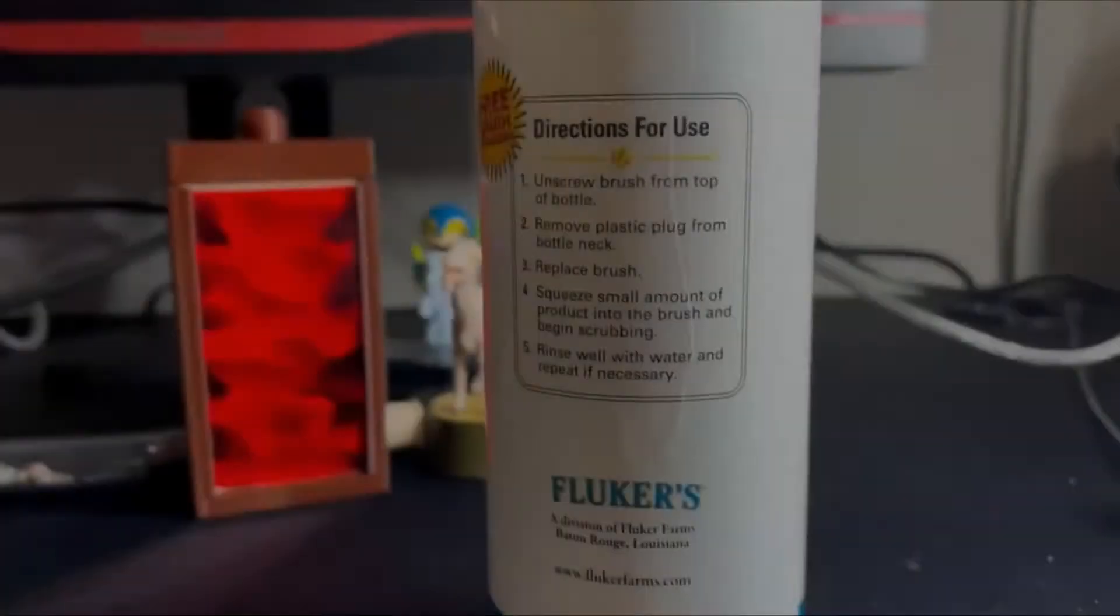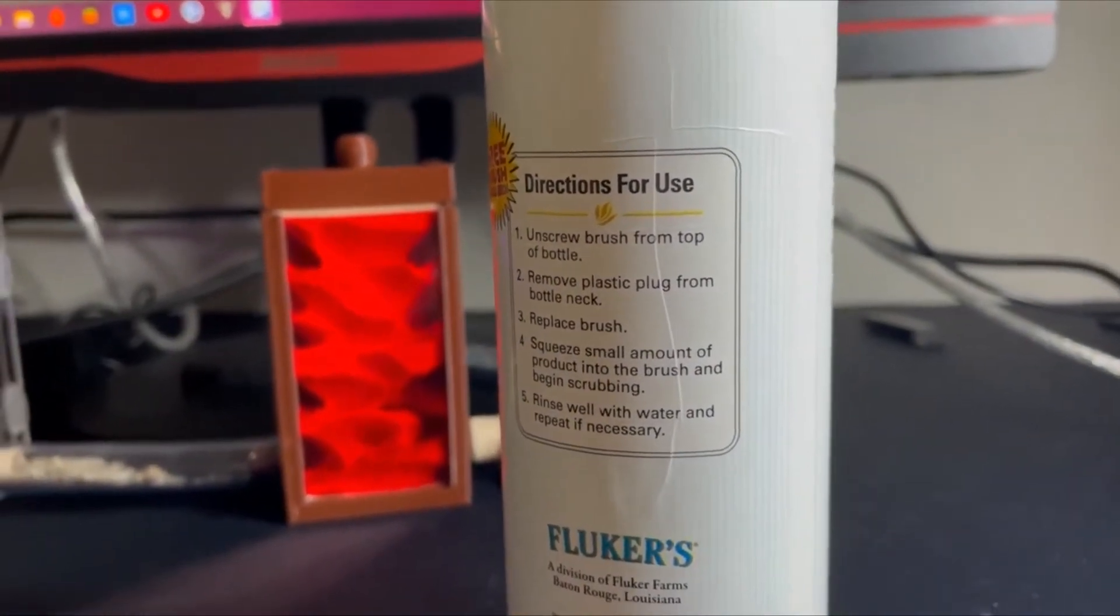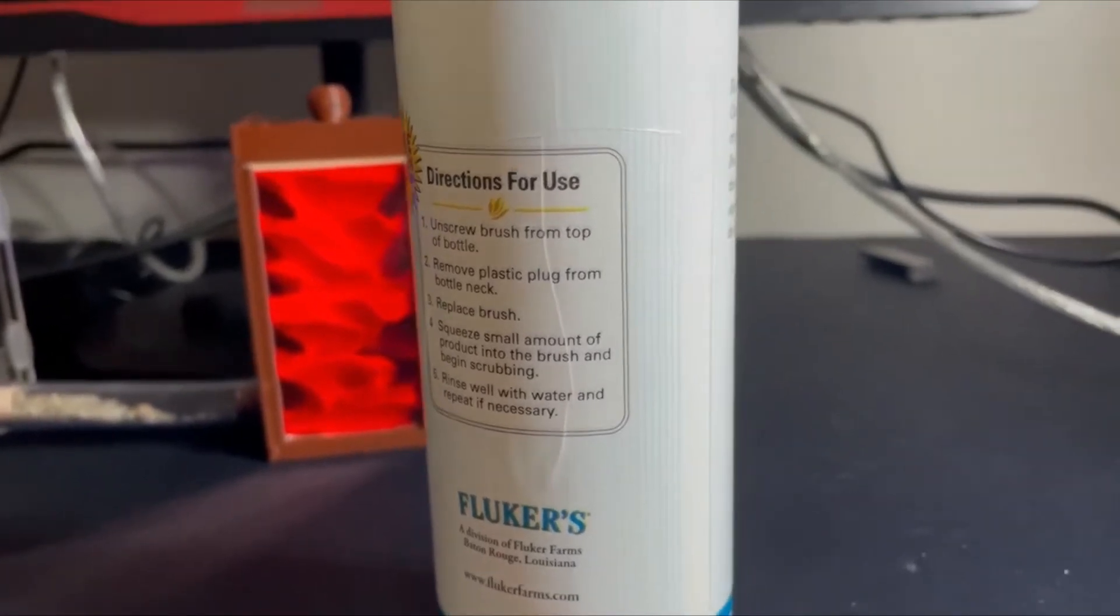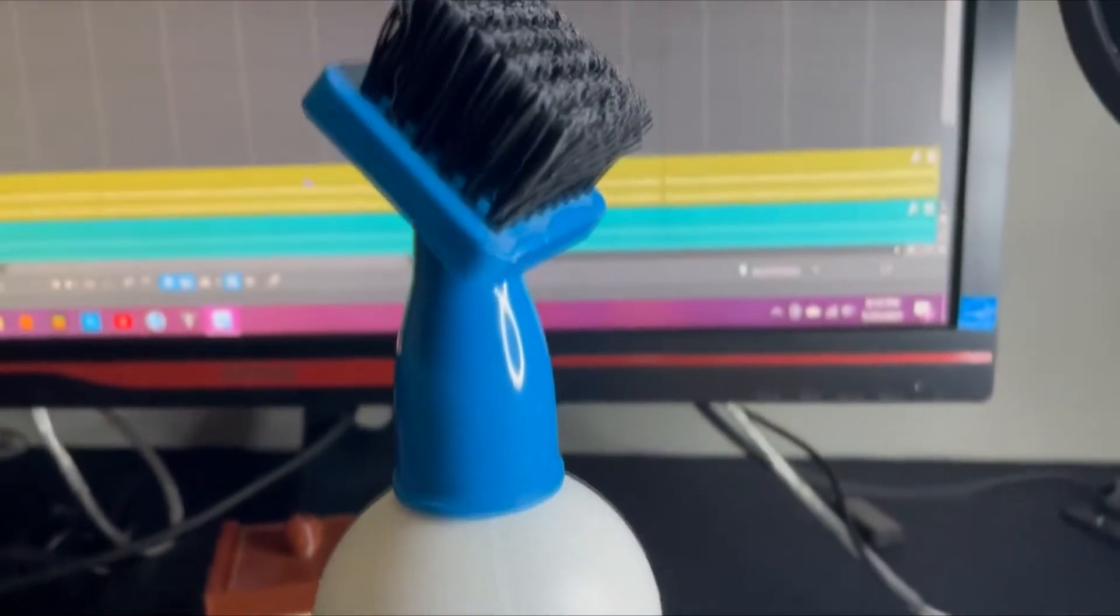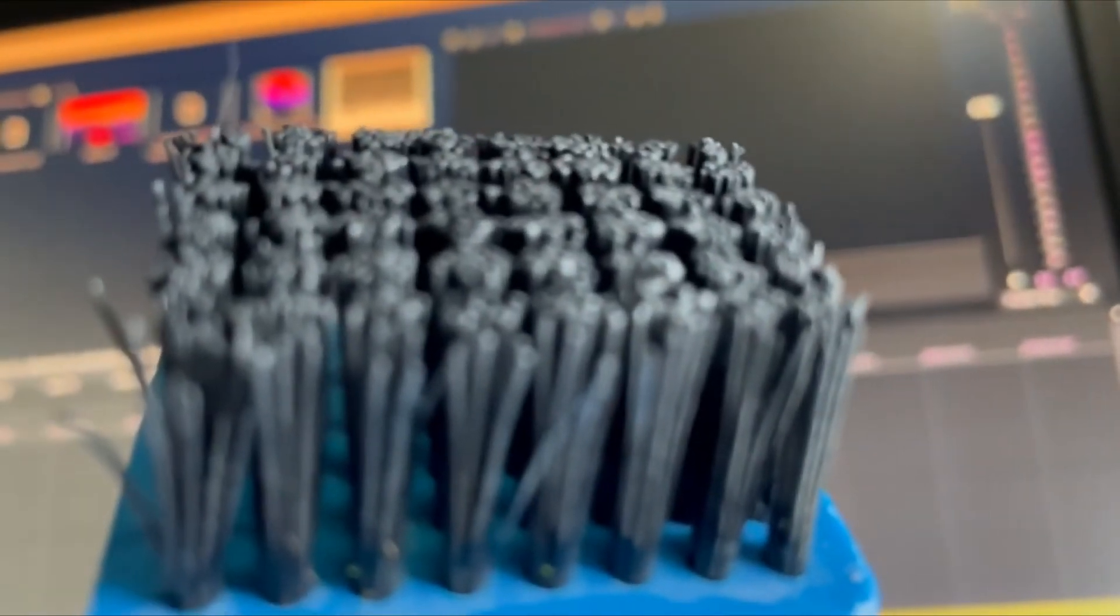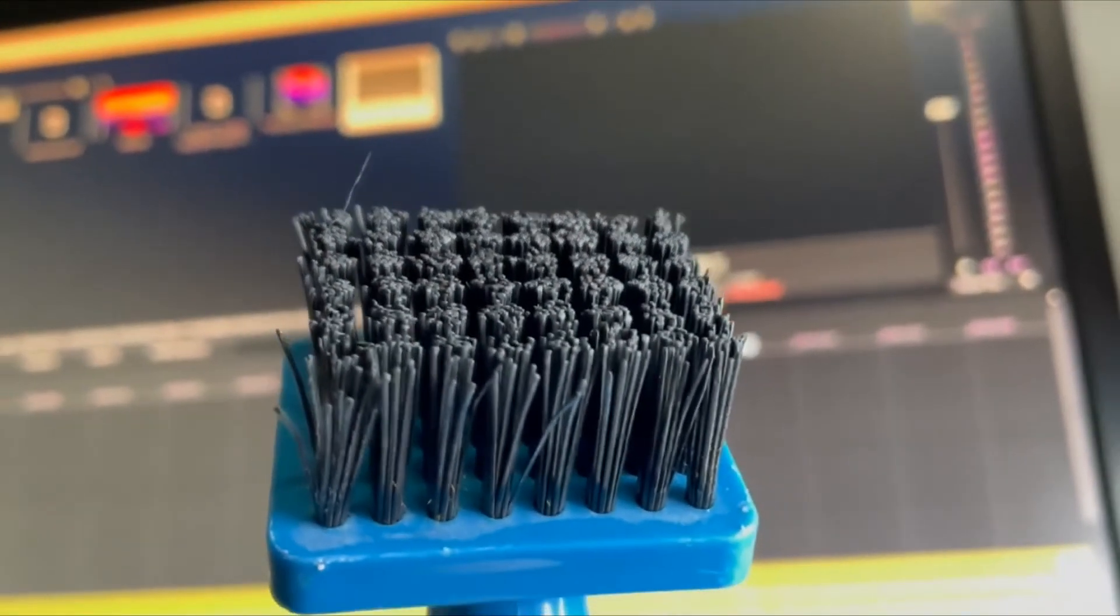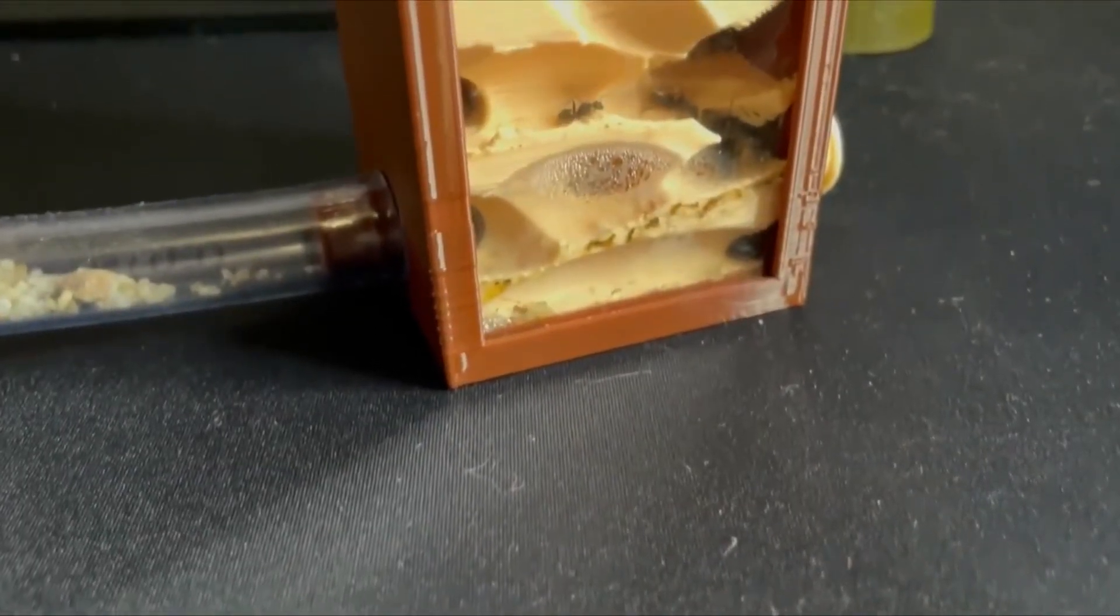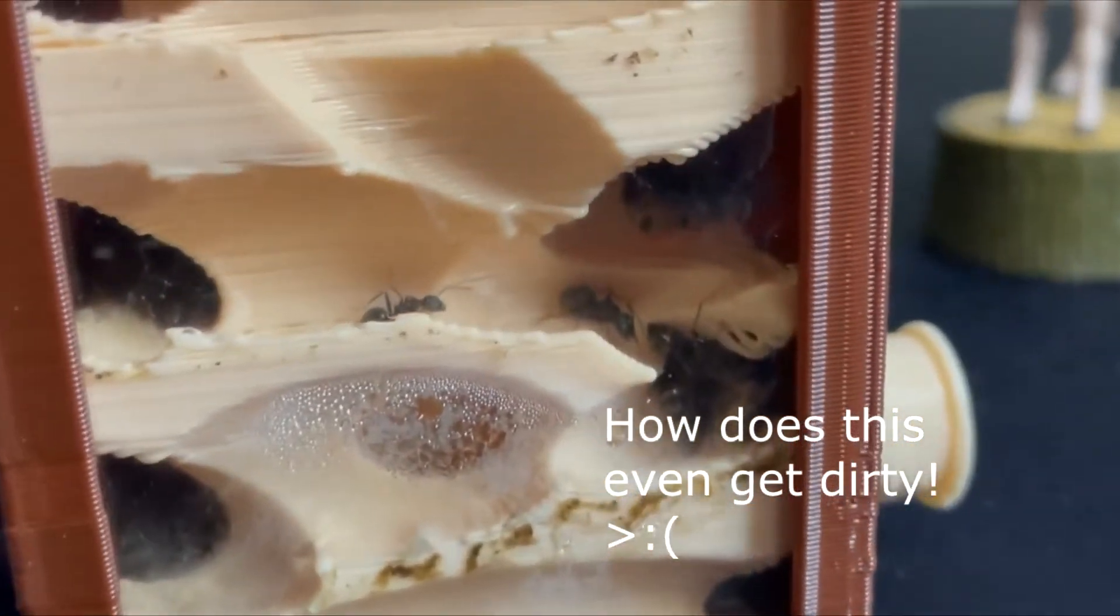Just be sure whenever you're using this Fluker's solution, use hot water to wash the nest, let it sit, then you use the Fluker's disinfectant solution on the nest. Let that sit for about three to five minutes, and then you use hot water to wash it off. Make sure you let it sit to dry because the last thing you want is to put a disinfectant in with your ants. It shouldn't kill them because it is non-toxic, but you still don't want to take the risk—it is a disinfectant after all.